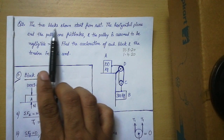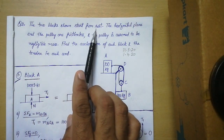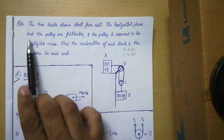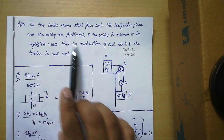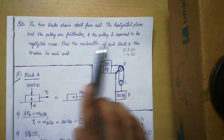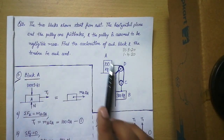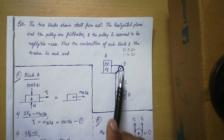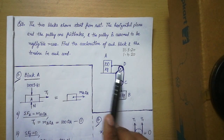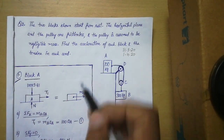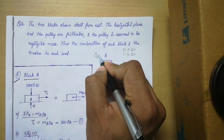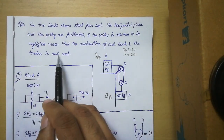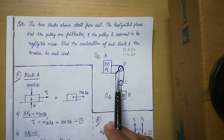Let us read the statement first. The two blocks shown start from rest. The horizontal plane and the pulley are frictionless everywhere — there is no friction. The pulley is assumed to be of negligible mass, meaning MC and MD are zero. We need to find the acceleration of block A, the acceleration of block B, and the tension in each chord.